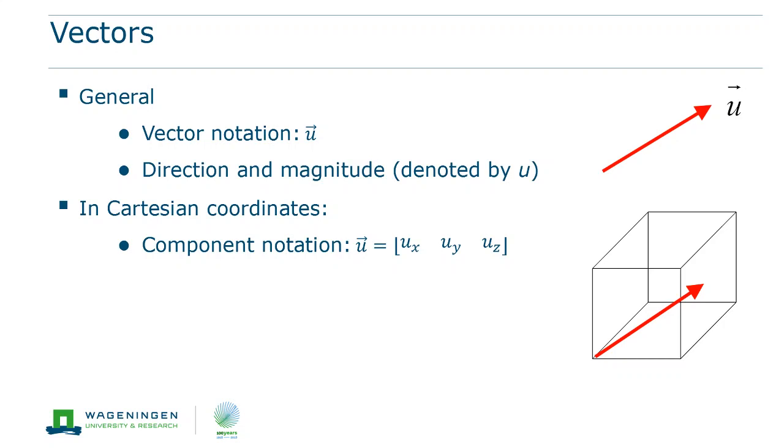Together, these three components construct the total vector. In this way, we can build a vector from multiple component vectors. So, the components would be ux, uy, and uz.